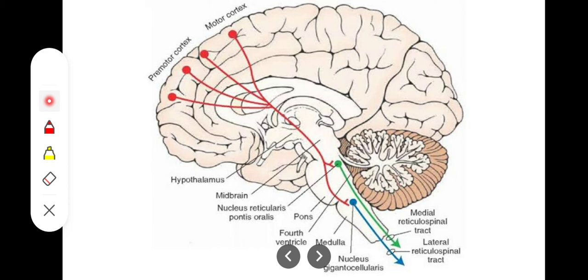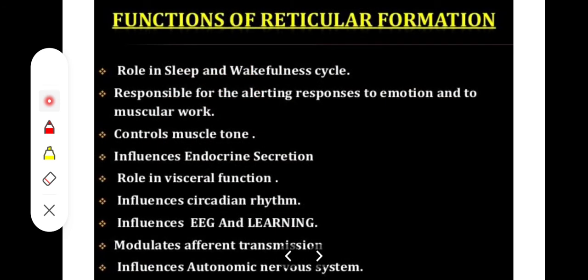The reticular formation also gives rise to the sympathetic outflow tract and parasympathetic cranial outflow, thereby controlling the autonomic activity of the body. Additional efferents go to structures including the tectum, vestibular nucleus, substantia nigra, corpus striatum, and cerebellum. This represents the overall body control exerted by the reticular formation.